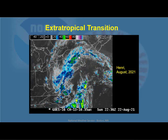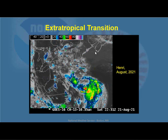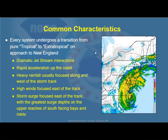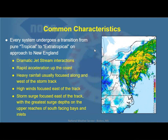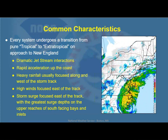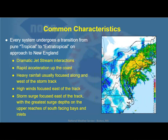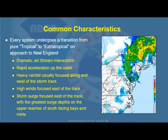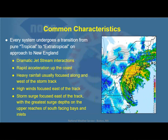You can see the system eventually just decays and dissipates. The main reason is because of jet stream interactions. Really, every system undergoes this transition from being pure tropical to extratropical on approach. Of course there are exceptions, but in most cases this is what we see.